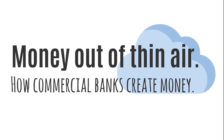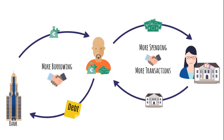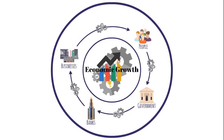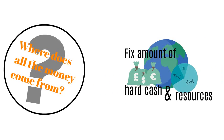In this video I will try to explain how commercial banks create money. But first we should look back at the effects of lending and borrowing on an economy. As explained in a previous video, more borrowing leads to more spending and causes more transactions. This development results in economic growth. But where does all this money come from, especially considering that the amount of cash and resources available is limited?